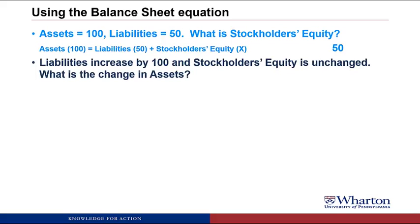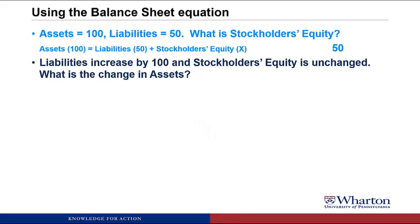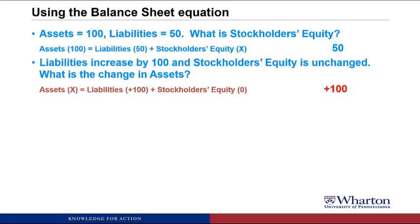Next: liabilities increase by 100 and stockholders' equity is unchanged — what is the change in assets? We can use the balance sheet equation looking at changes. Stockholders' equity is unchanged, liabilities go up by 100, so the only way for the equation to stay in balance is for assets to also go up by 100.